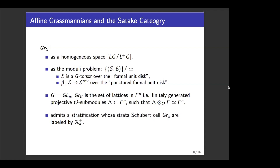I won't go into the details of the definitions. But if you find the previous two definitions are not really concrete, we actually have a very concrete definition in the case G equals GL_n. In this special case, the affine Grassmannian for G is in fact the set of lattices in F^n. By saying lattice, I mean it is a finitely generated projective O-submodule λ in F^n, such that λ ⊗_O F is isomorphic to F^n.